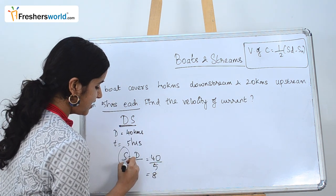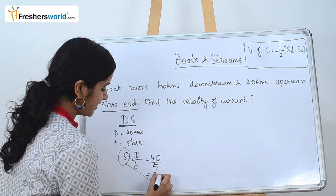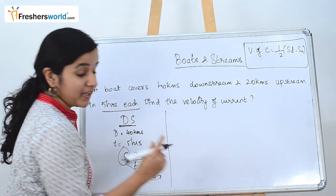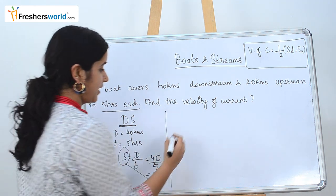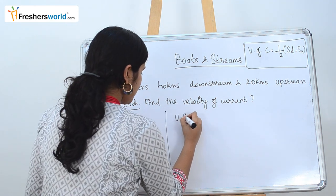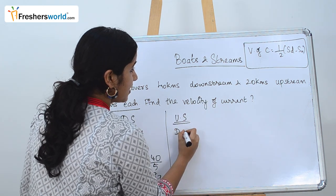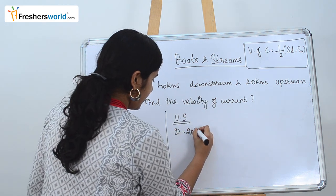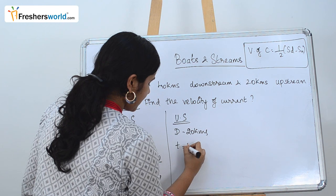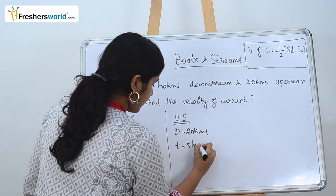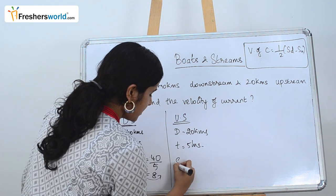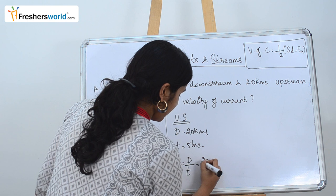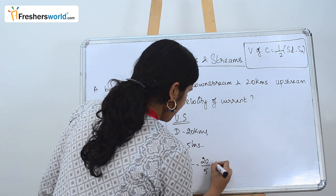Distance is 40 and time is 5, which gives us 8, so the downstream speed is 8 kilometers per hour. For upstream speed, the distance covered is 20 kilometers and time is five hours each, so speed is distance by time: 20 by 5 which equals 4 kilometers per hour.